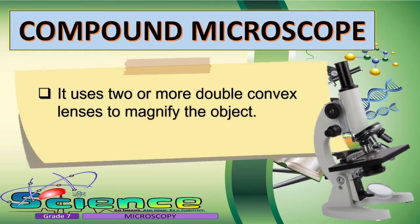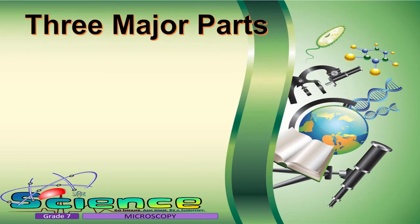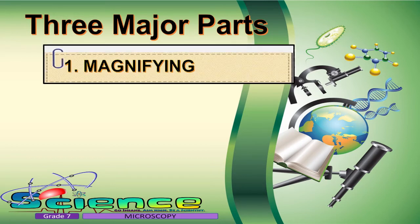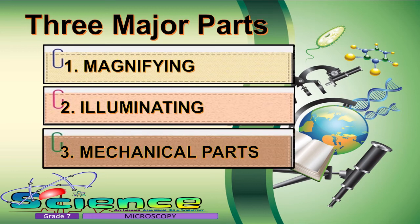These two lenses can be found on the eyepiece and the objectives of the microscope. A compound microscope comprises three major parts based on their functions: the magnifying parts, the illuminating parts, and the mechanical parts.